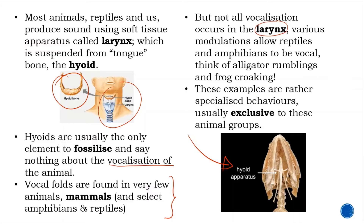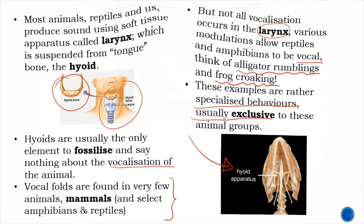But not all vocalization occurs in the larynx. Various modulations allow reptiles and amphibians to be vocal — think about alligator rumbling or the frog croaking. These examples are rather specialized behaviors, usually exclusive to those animal groups.